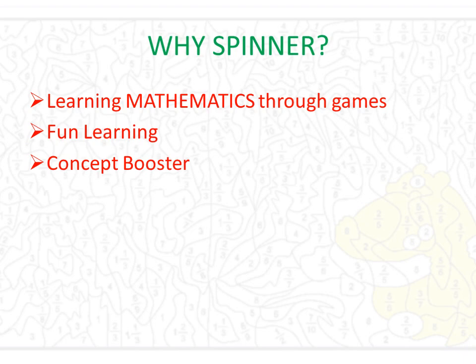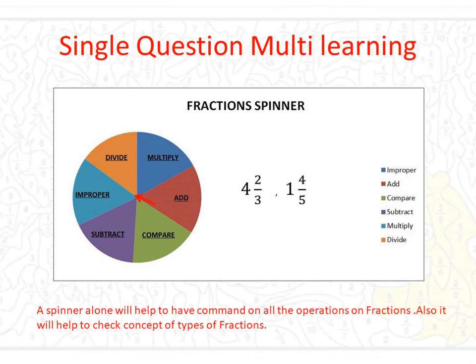Here is your fraction spinner. In this spinner you have six questions. Firstly, you will convert the given fractions into improper fractions, and afterwards you have to apply the operations — the algebraic operations — of addition, subtraction, multiplication, and division, which are mentioned in the spinner, on the given fractions.